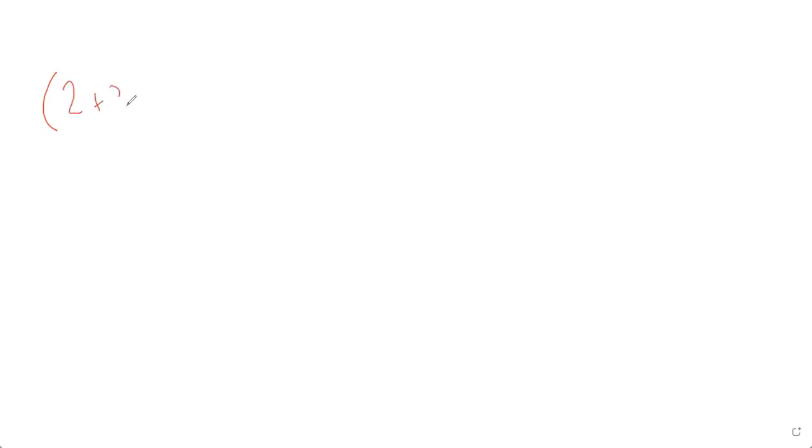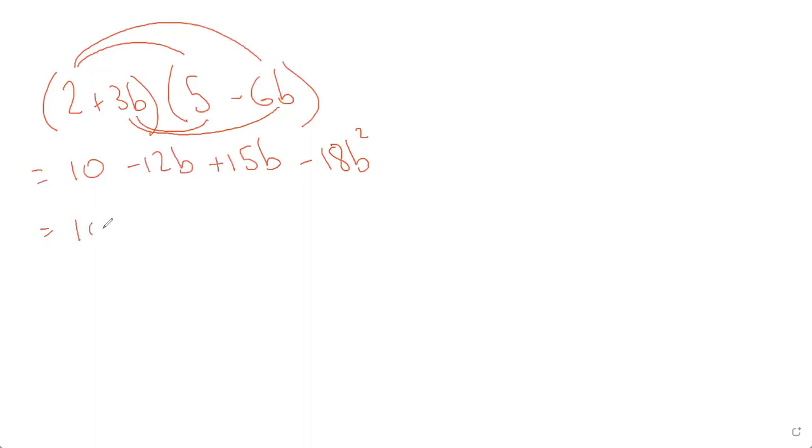What if I did (2+3b)(5-6b). This time the letter is in the wrong place and I've got numbers attached to it. There's nothing wrong with that. It's still exactly the same question. So I'm still going to start with my first ones. What do I get? 10. Outside, minus 12b. Inside, plus 15b. And my last, minus 18b². There are two b's so don't forget you're squared. Now I've got middle terms that match. So 10 plus 3b minus 18b².